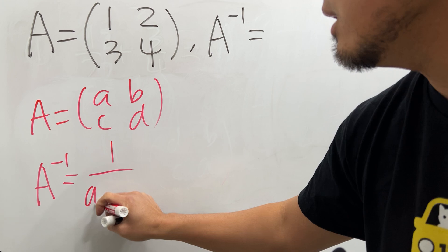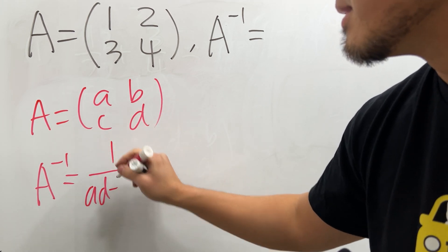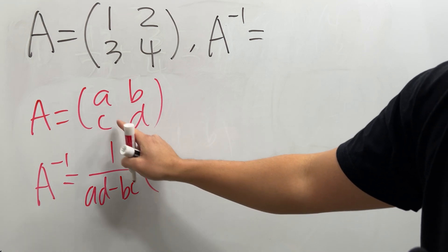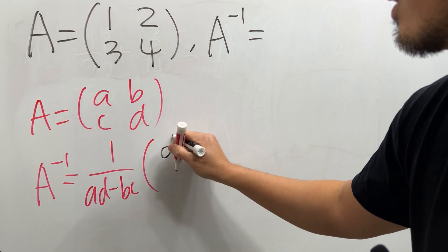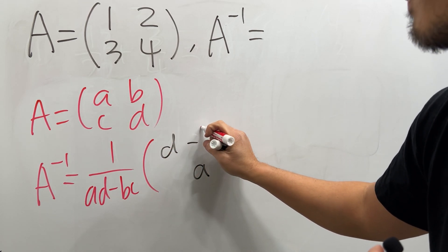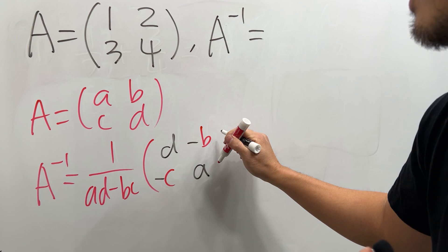which is just A times D, and then minus this times that, which is B times C, and then times the following matrix. What we do is we switch this and that. So we have D going here and then A going here, and then make these two negative. So we have negative B and then negative C. That's pretty much it.